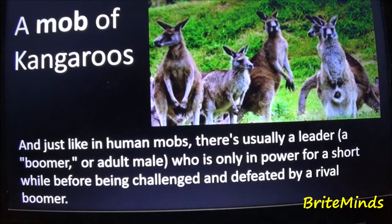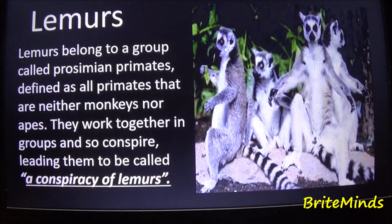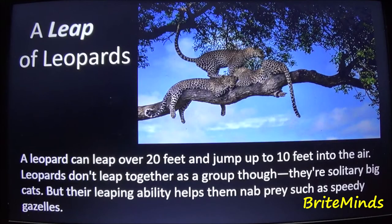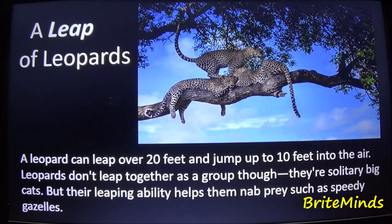Lemurs belong to a group called prosimian primates, defined as all primates that are neither monkeys nor apes. They work together in groups and conspire, leading them to be called a conspiracy of lemurs. Leopards: a leap of leopards — a leopard can leap over 20 feet and jump up to 10 feet into the air. Leopards are solitary big cats, but their leaping ability helps them nab prey such as speedy gazelles.